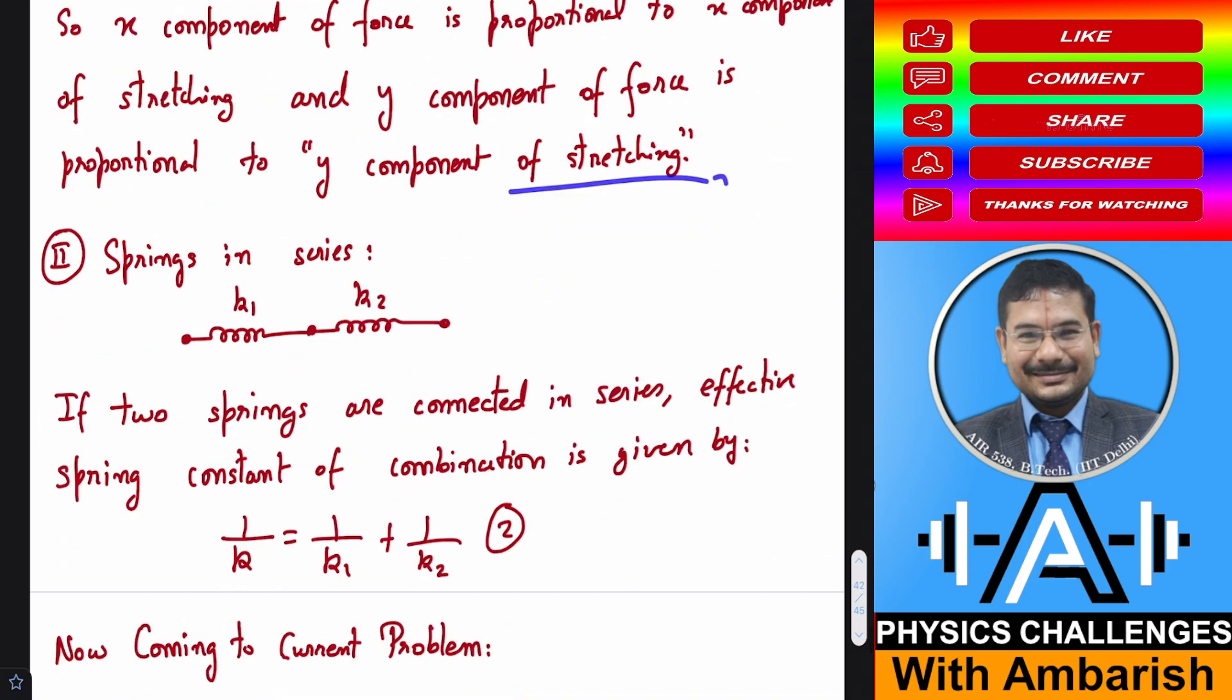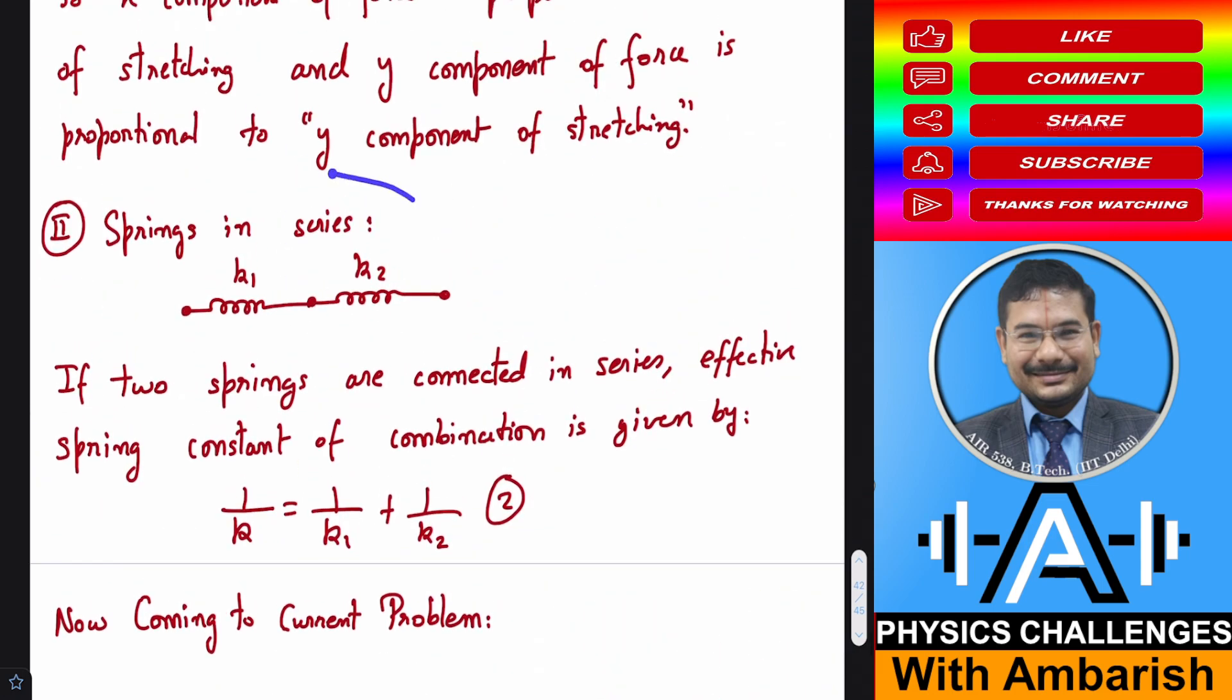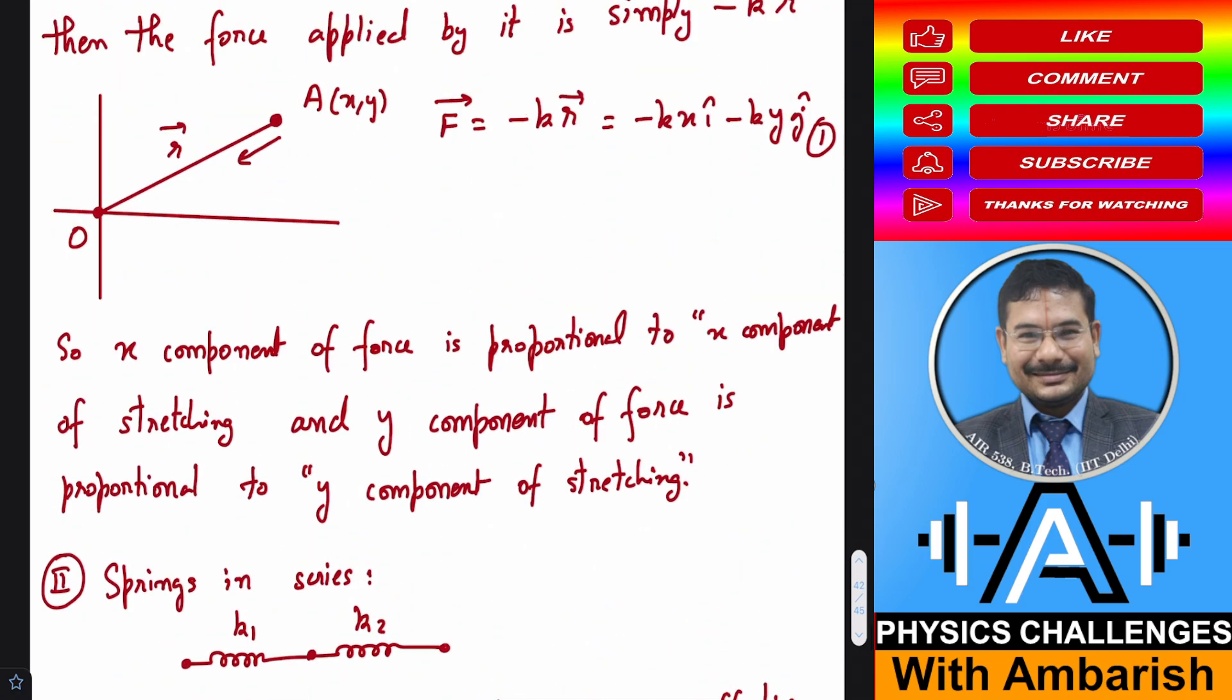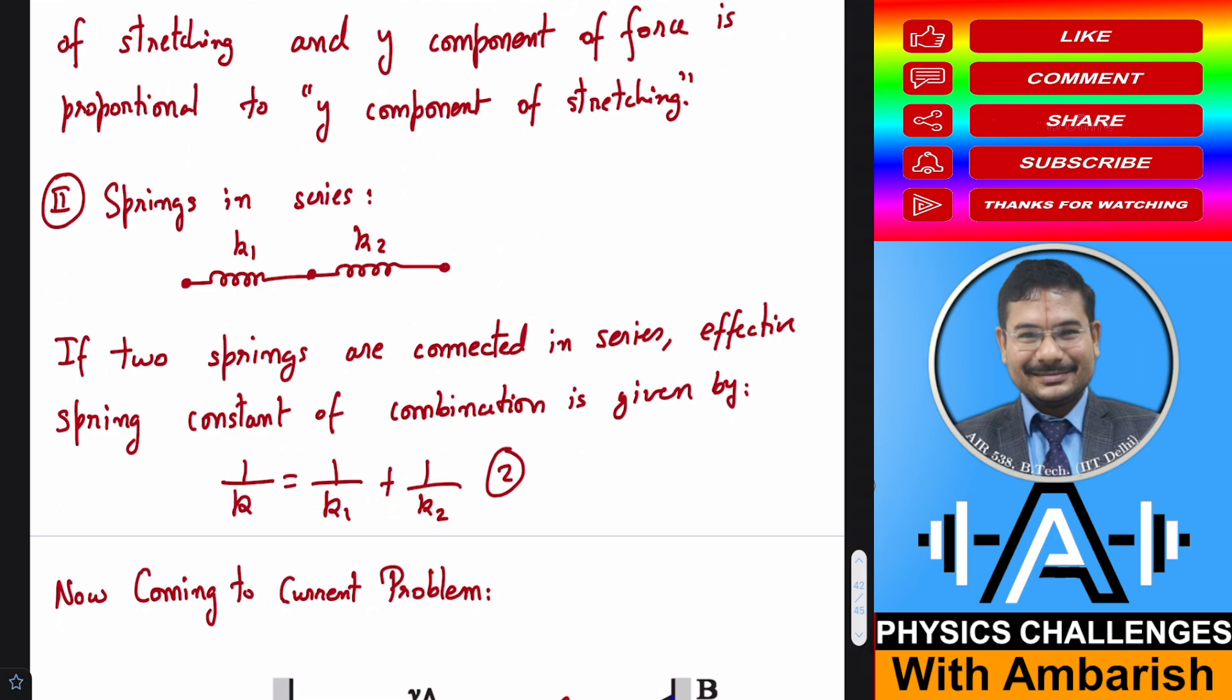Another thing that you must have studied in your standard theory while studying springs is the combination of springs in series. If you have two springs K1 and K2 connected in series, then effective spring constant of the combination is simply given as 1 by K effective equals 1 by K1 plus 1 by K2. These are the two concepts I'm going to use: the concept of point spring and springs connected in series.